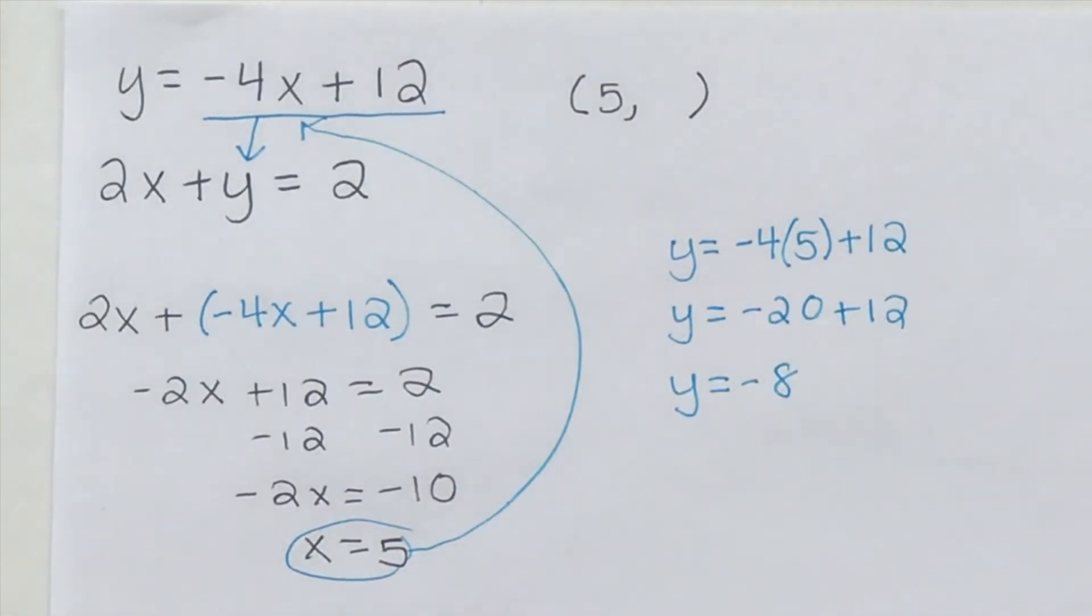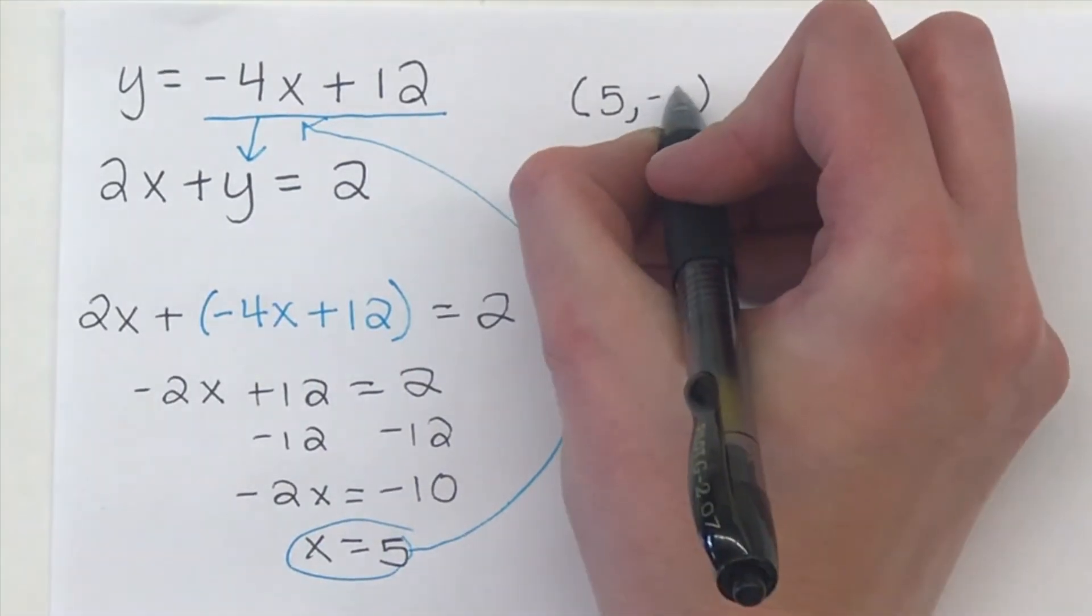So our ordered pair that we are going to get is 5 comma negative 8.